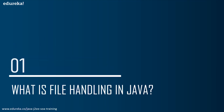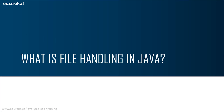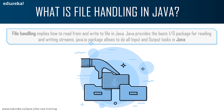Let's get straight into the module. File handling in Java implies how to read from a file and how to write to a file. Java provides the basic input/output package for reading and writing streams, and Java dot IO package allows you to do all the input and output tasks in Java.